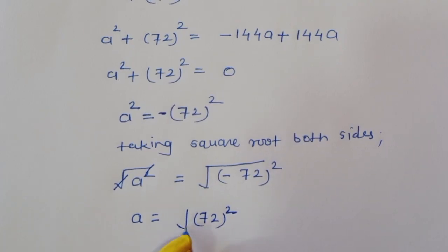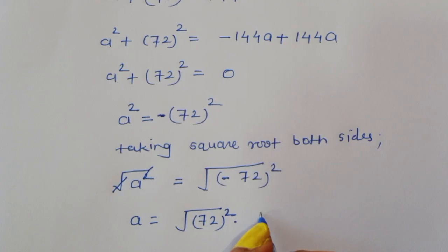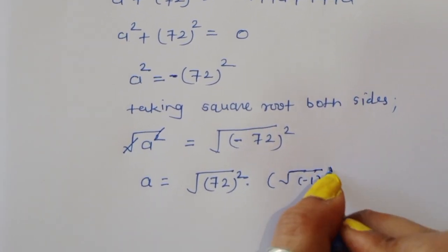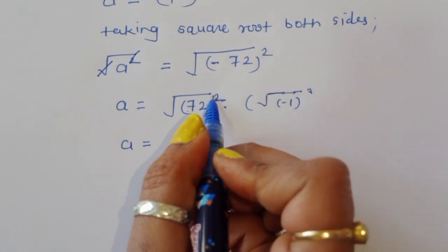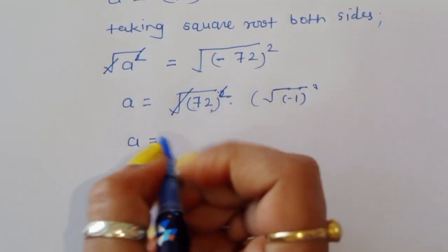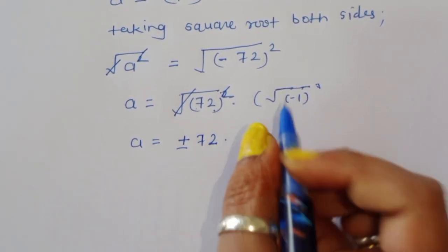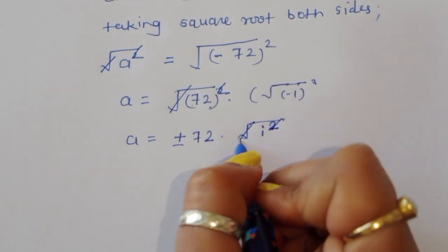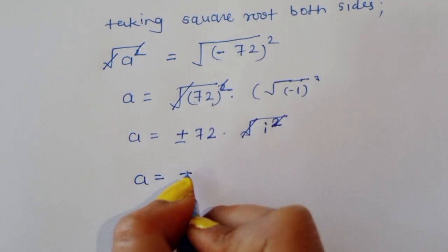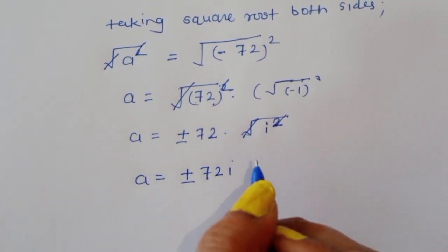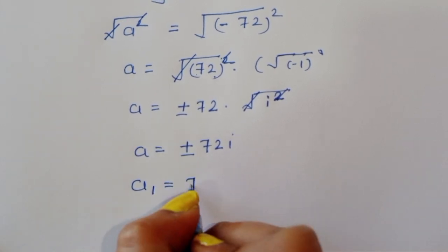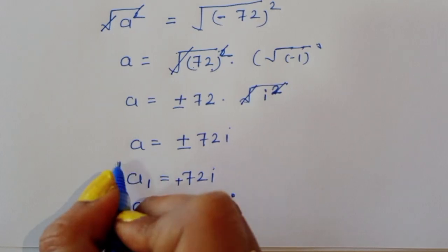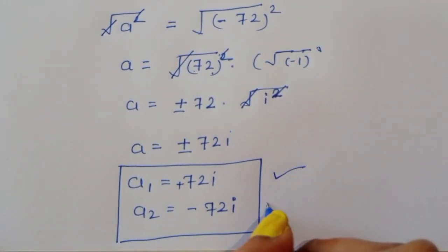Since √(−1) = i, we have a = ±72i. Therefore, a₁ = 72i or a₂ = −72i. These are the two values of a. This is the complete solution. Thank you.